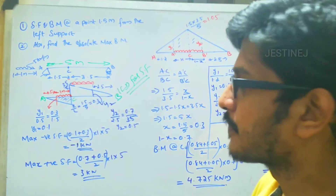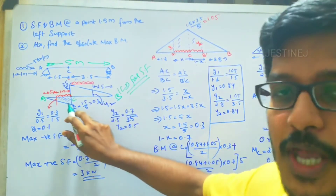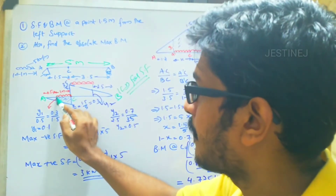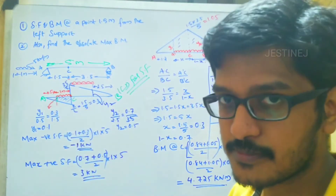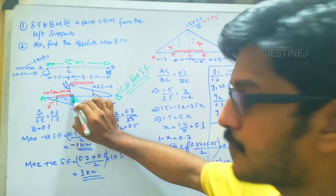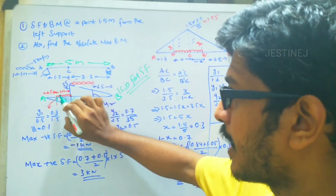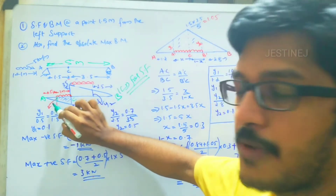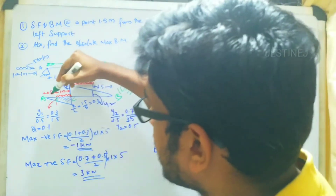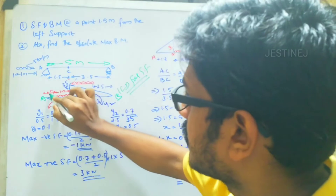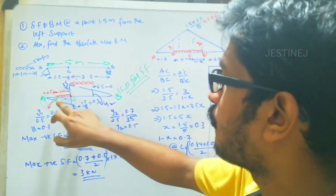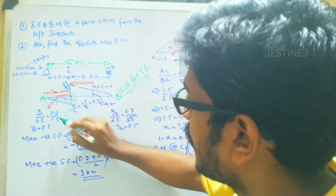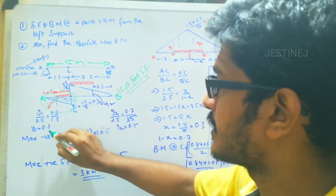We need to find the ordinate Y1 at the point 1 meter away from C, since the UDL span is 1 meter. When the head of the UDL touches point C, the tail is 1 meter away. Using similar triangle law — small triangle to bigger triangle — Y1 by 0.5 equals 0.5 by 1.5 (the remaining distance), giving Y1 equals 0.1.